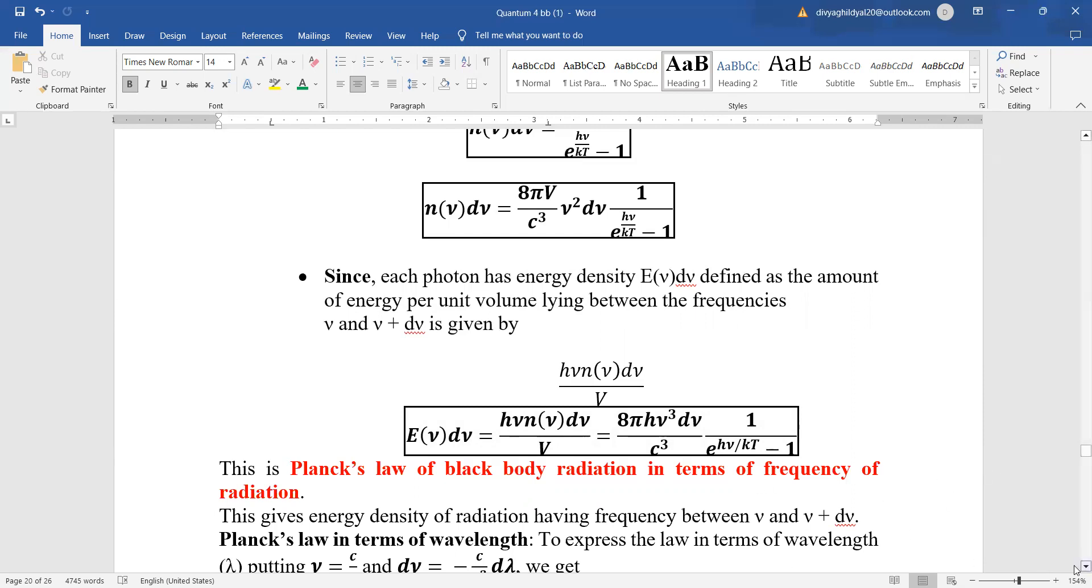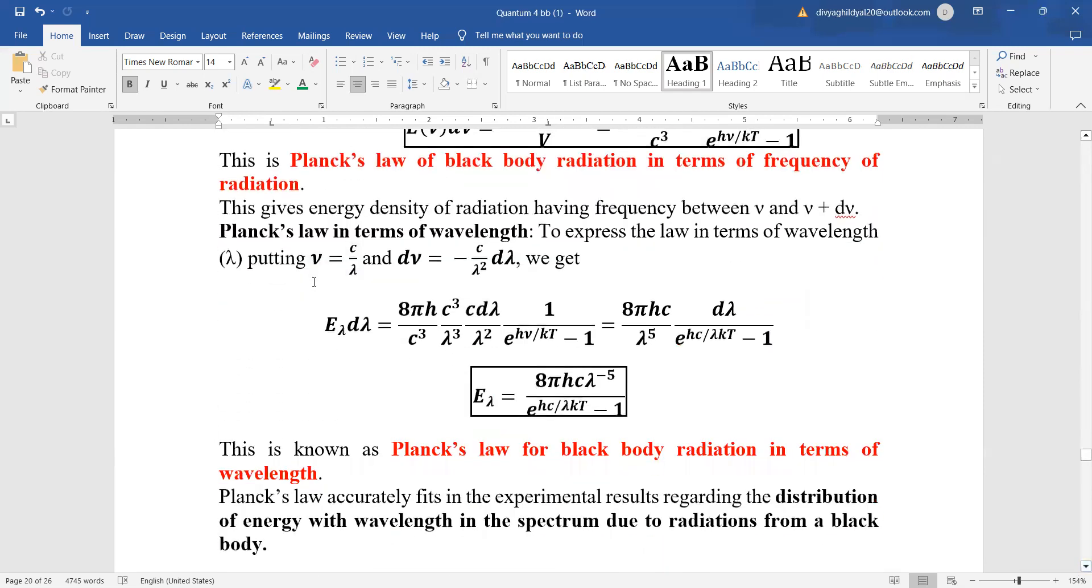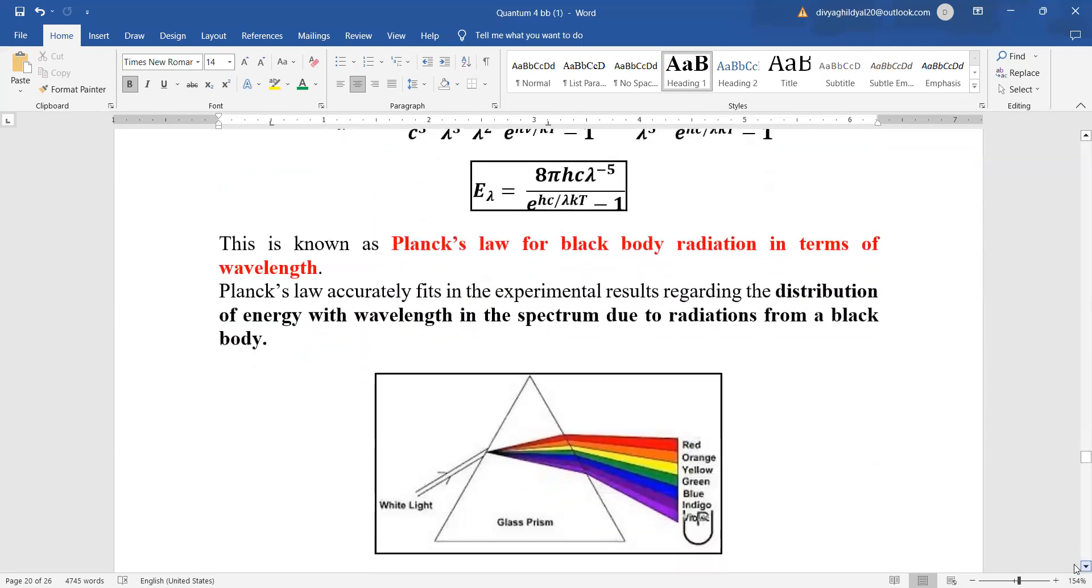You can also write this in terms of wavelength. Putting the formula velocity equals frequency times wavelength, or mu equals c by lambda, into the above expression, you get e lambda equals 8 pi h c lambda to the power of minus 5 divided by e to the power of (h c divided by lambda kT) minus 1. This is Planck's law for black body radiation in terms of wavelength.